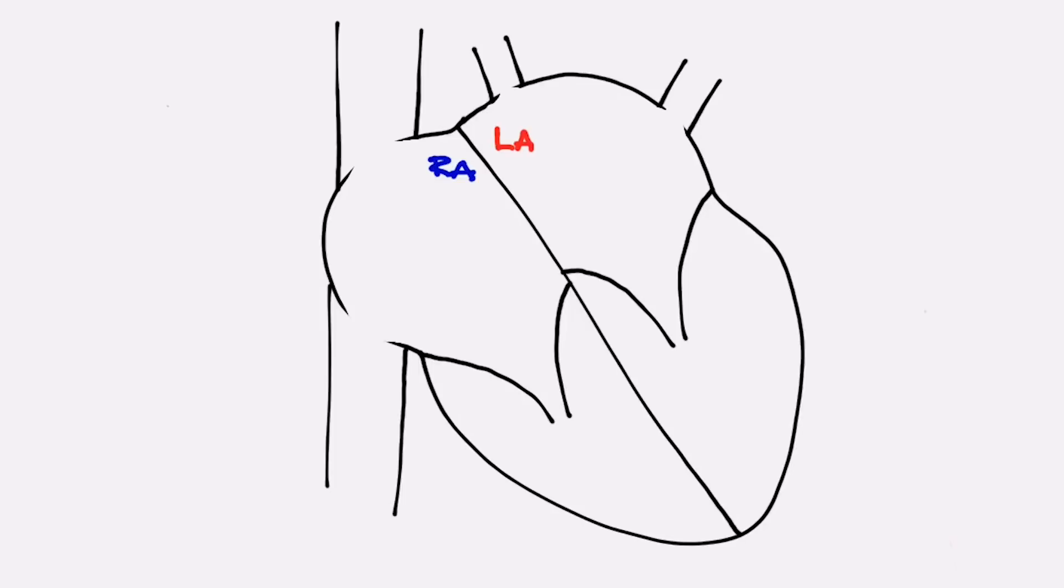The bottom chambers are called ventricles, right ventricle on the right, left ventricle on the left.